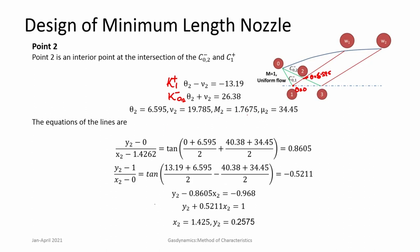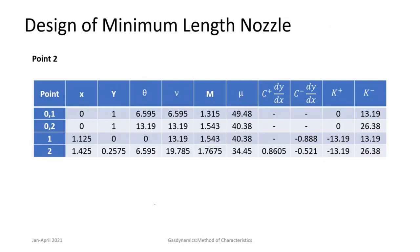The flow is deflected by 6.595 degrees with respect to the x-axis. Mach number has increased to 1.7675 and mu₂ has changed. We then find x₂ and y₂ by writing the equations of straight lines between the two points 0→2 and 1→2, substituting the known values for points 1 and 0, giving us the numbers x₂ and y₂. These can again be put into the table.